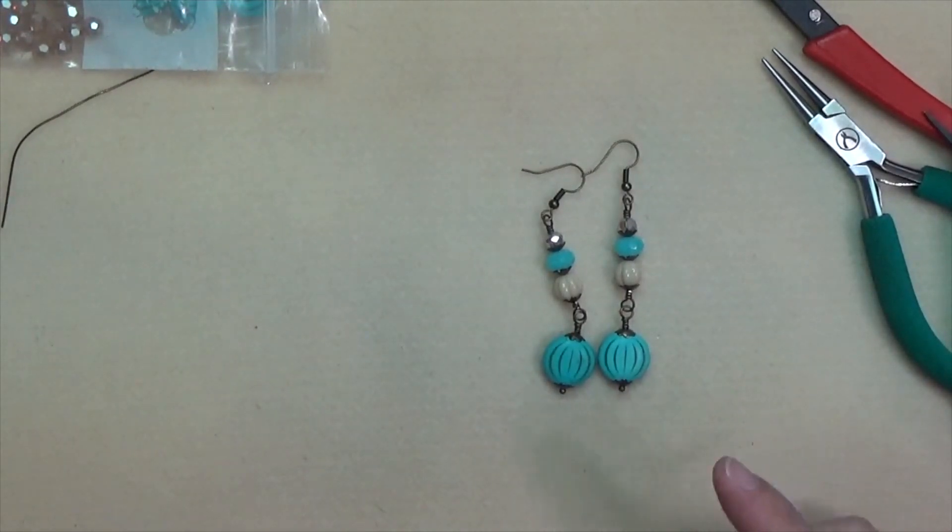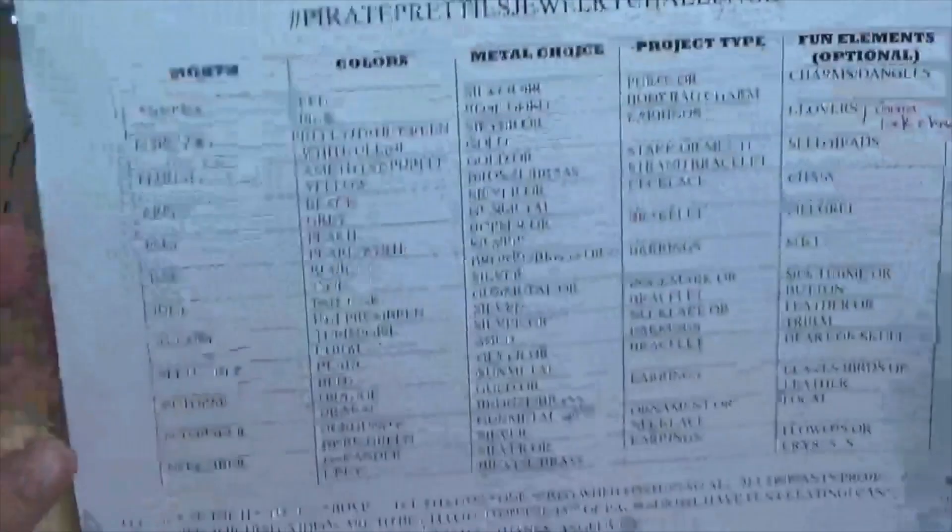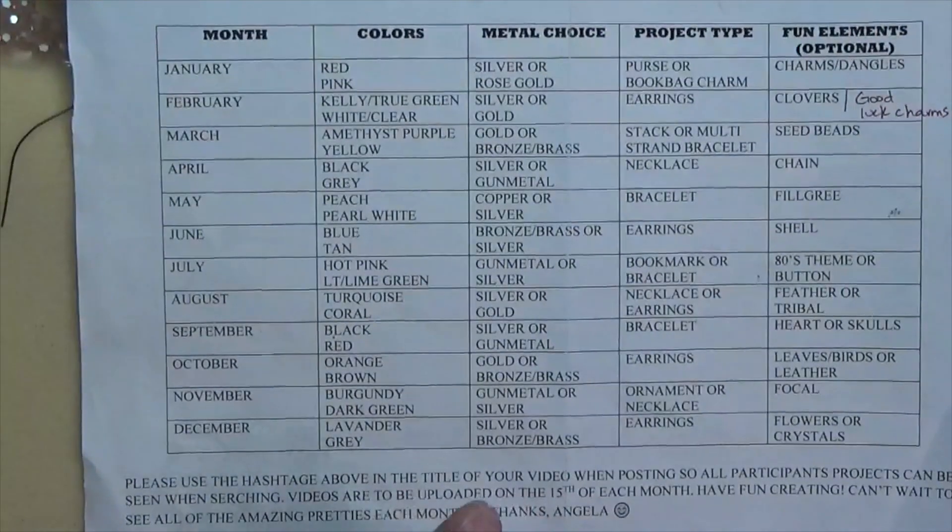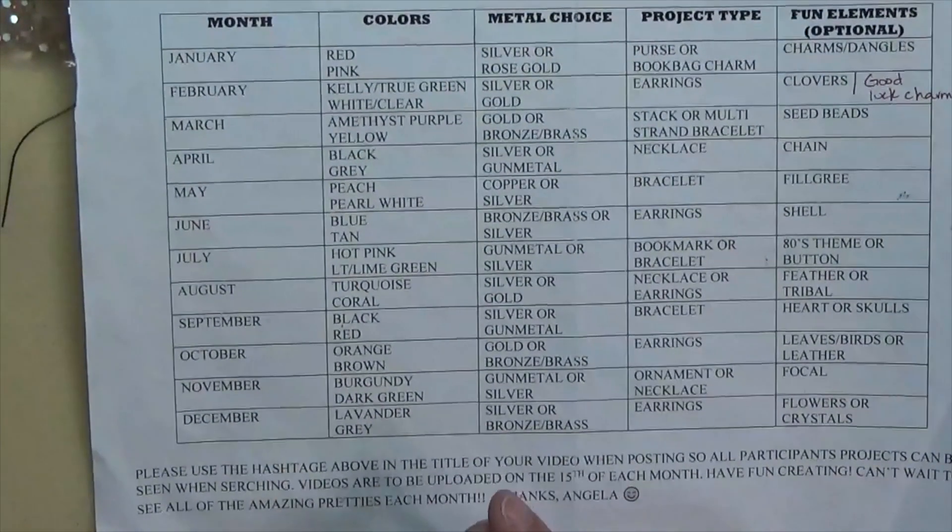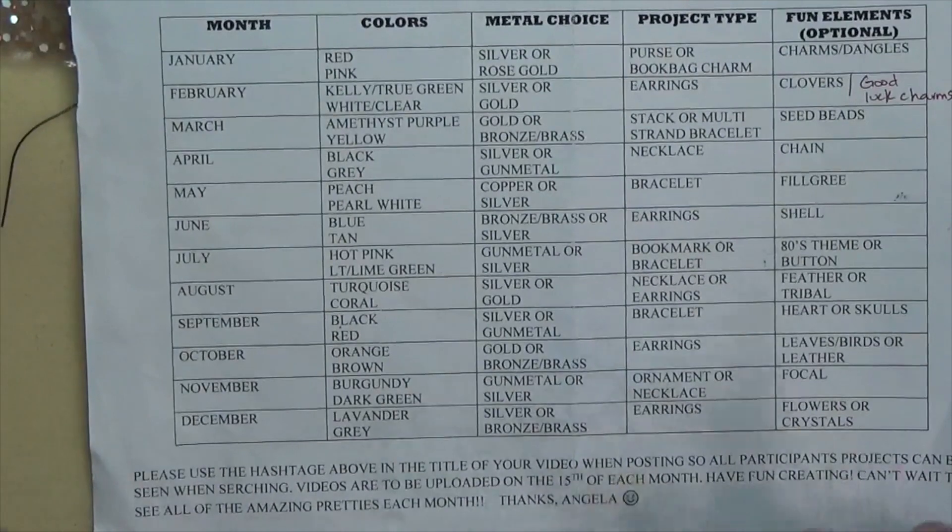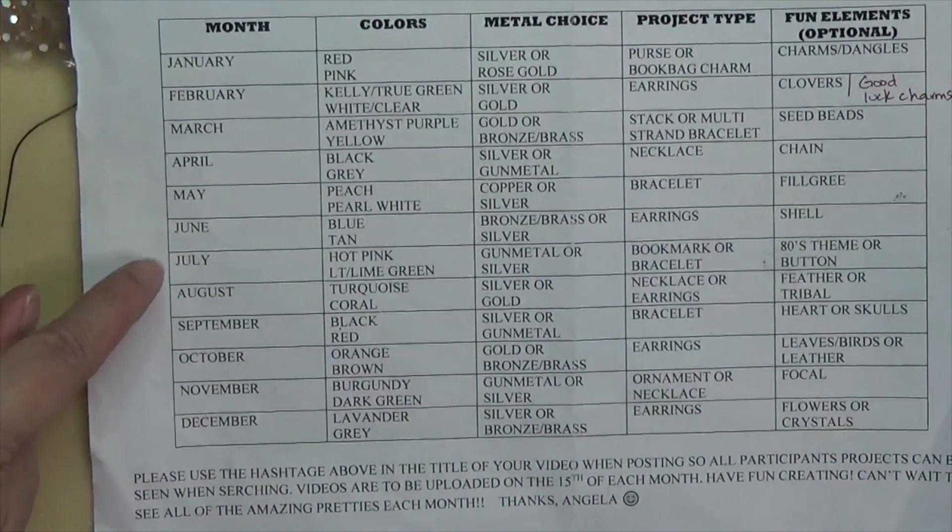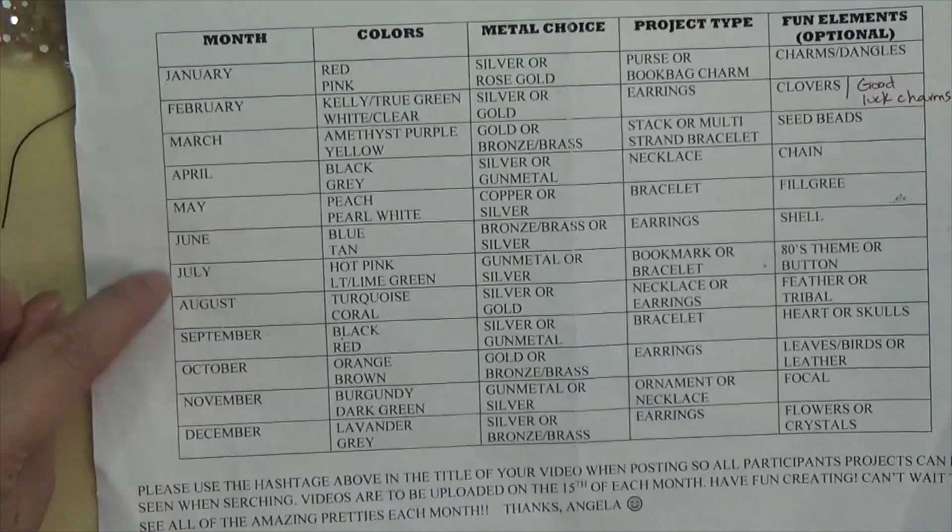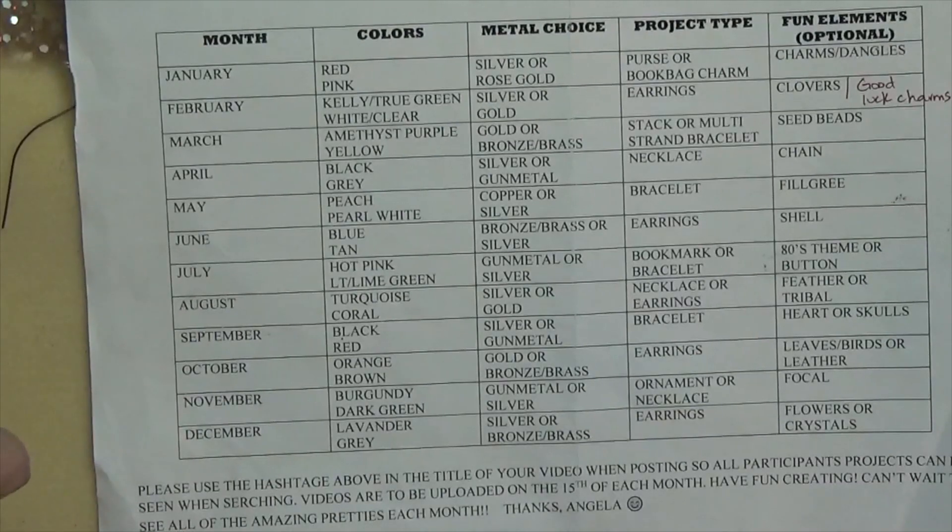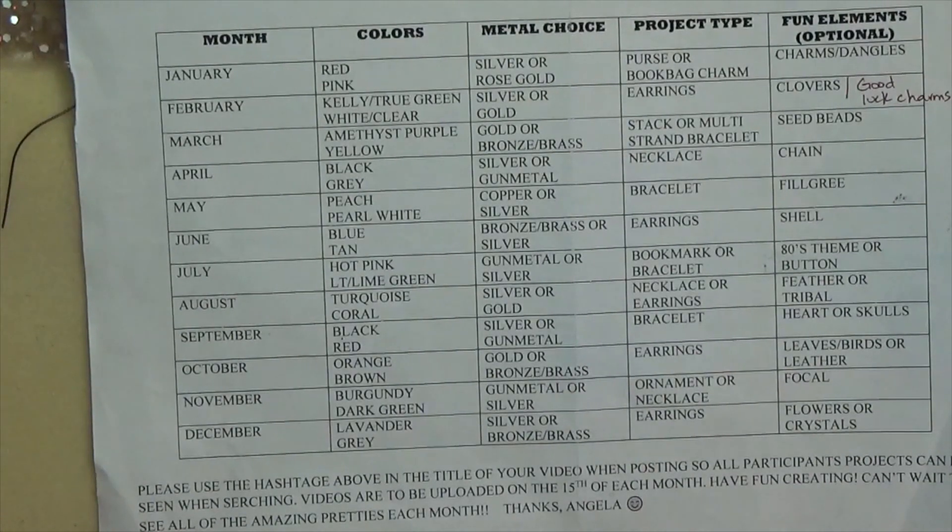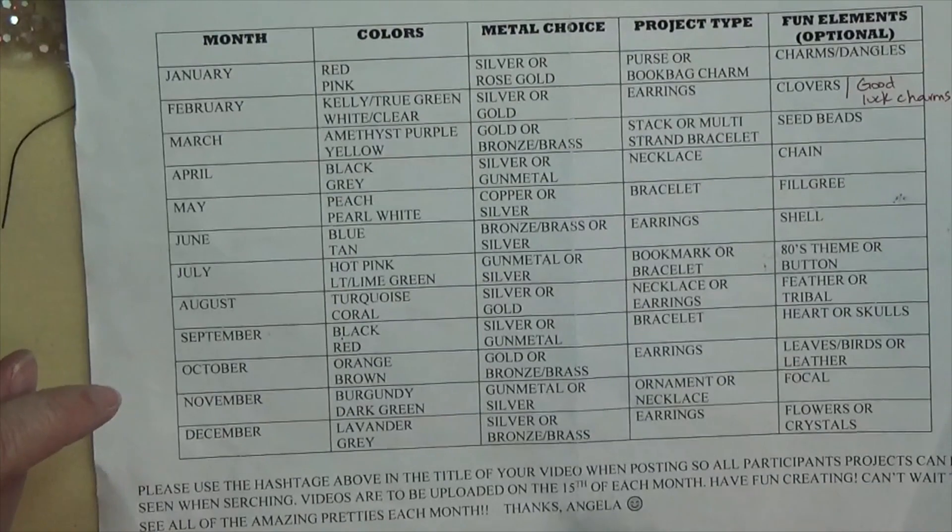That is my contribution for the Pirate Pretties Jewelry Challenge. Make sure you go check out what Angela made and click that hashtag to see what the other participants have made. I'm going to go ahead and tell you real quick what July's prompts are just so that you can be prepared. The colors are going to be hot pink and either light or lime green, the metal choices are gunmetal or silver, project type is going to be a bookmark or a bracelet, and the fun element is an 80s theme or a button.